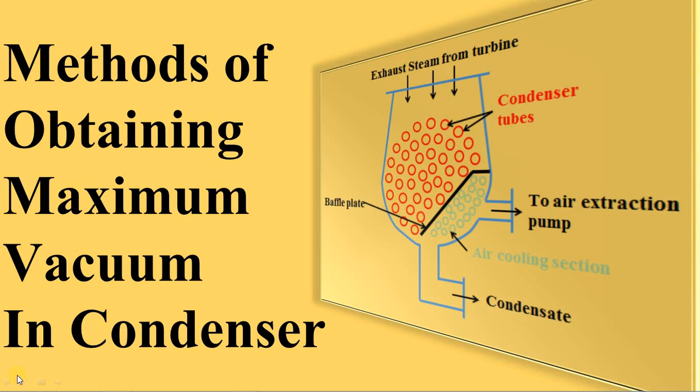In this video, I explain methods of obtaining maximum vacuum in a condenser. So how is vacuum created? Vacuum is created by removing the air from the condenser. There are four methods to obtain the maximum vacuum in a condenser.